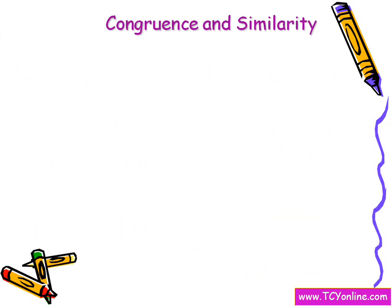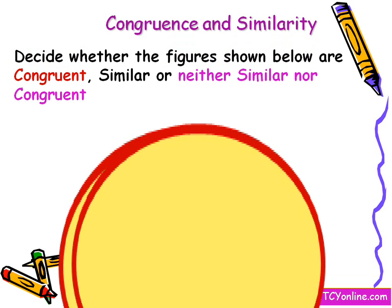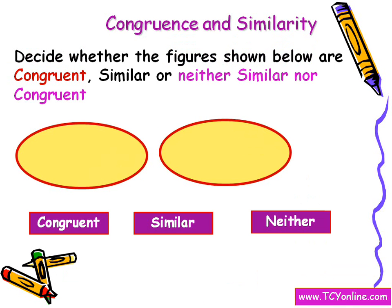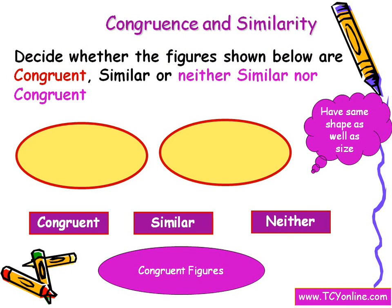Now let's try one more question on congruence and similarity. You need to decide whether the following figures are congruent, similar, or neither similar nor congruent. We can see that these two figures have the same shape as well as the same size, so they are congruent figures. Congruent figures have the same shape and same size, while similar figures have the same shape but not the same size.